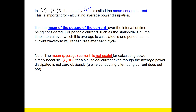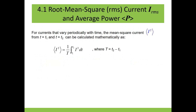I've introduced the mean square current; now I want to introduce the root mean square current. Why do we need one more thing? Because the mean square current has units of amperes squared. When we compare DC to AC we want to compare current with current — apple with apple. It's easy for us to compare numbers of the same units. So after finding the mean square current, we need to take its square root, giving us the root mean square current.